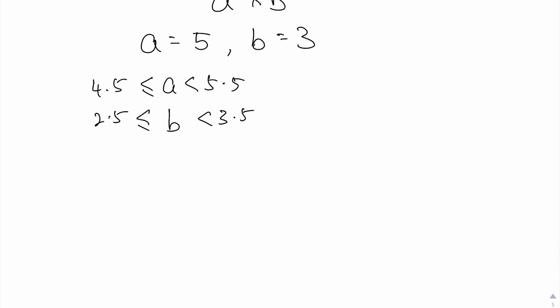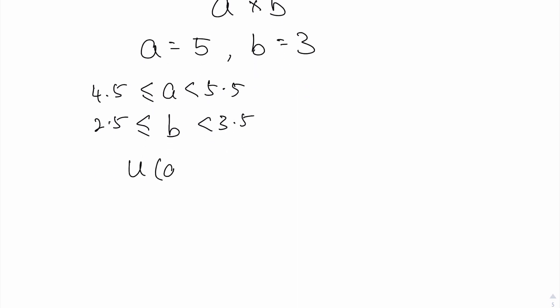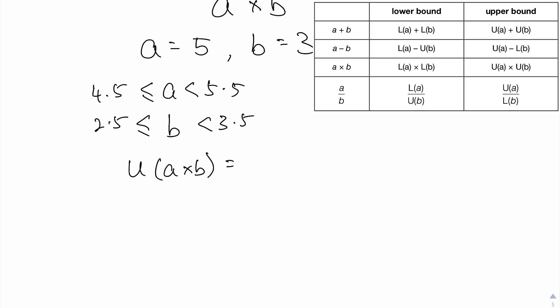Now with this, if I want to get the upper bound of A times B, I will need to have the upper bound of A times the upper bound of B. So I will have 5.5 times 3.5 and that's 19.25.